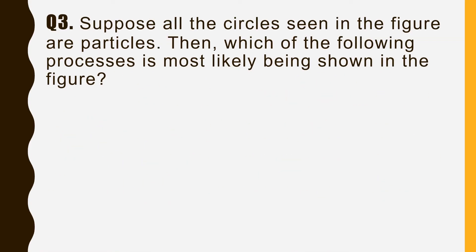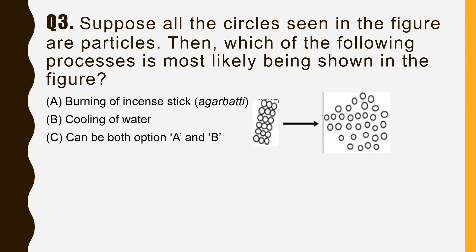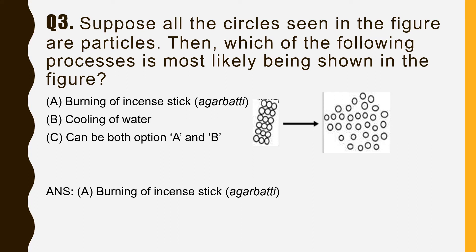The third question: suppose all the circles seen in the figure are particles — which of the following processes is most likely being shown? Option A is burning of incense; option B is cooling of water; option C is both A and B. The correct answer is option A — burning of incense — since the figure represents a burning process.